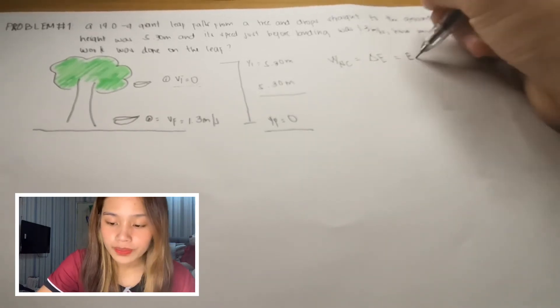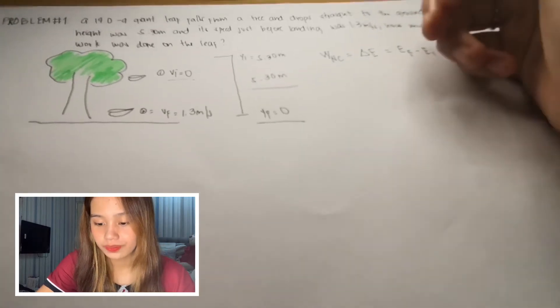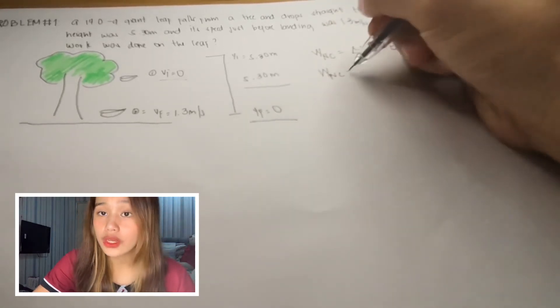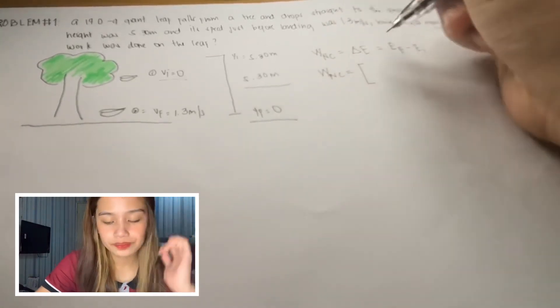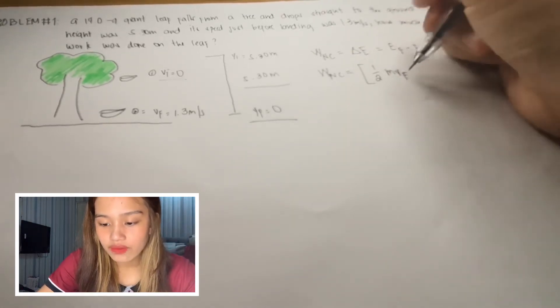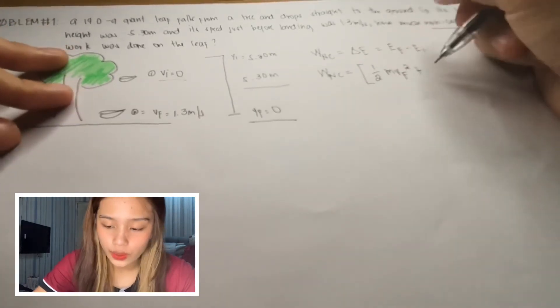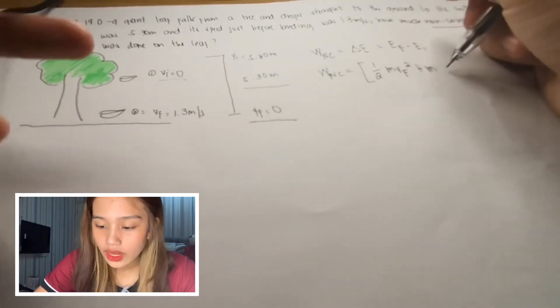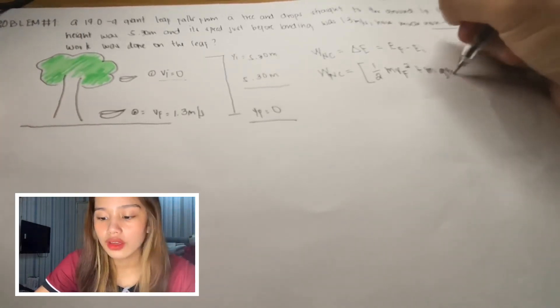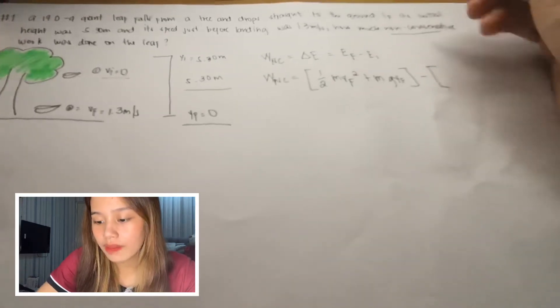Or simply this is energy final minus energy initial. And our equation will be 1/2 m v_f, or our final velocity, squared plus m times g times the final position minus...